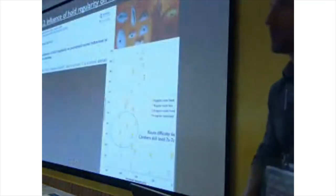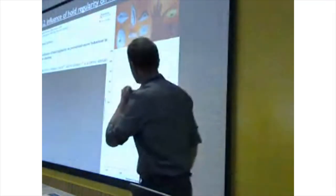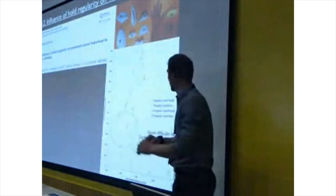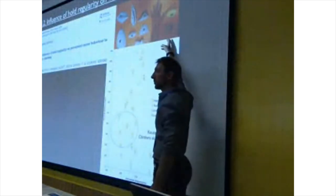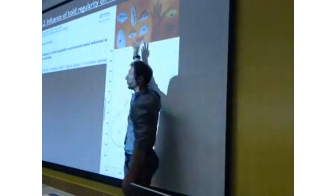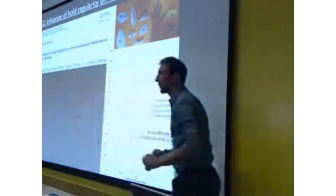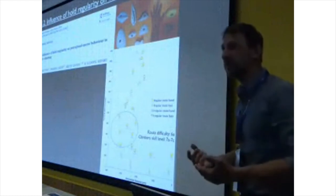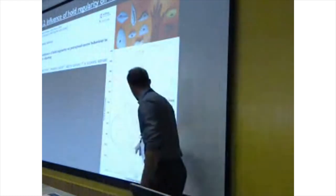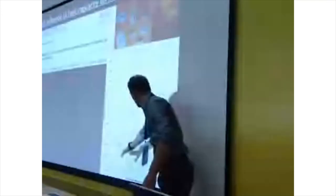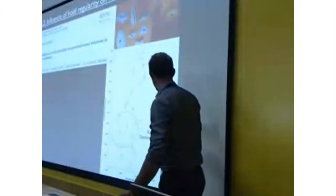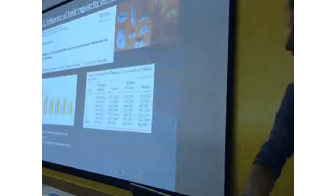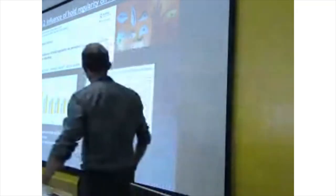The second study we tried to do is if we offer or if we design the route with very regular holds, so always the same hold, two types - round one, square one - and if in counterpart we use very different holds, how the regularity of the environment is perceived and used. There are the two routes. You can see the path is the same, just that we use regular one or irregular one.